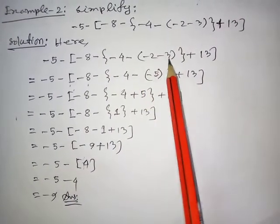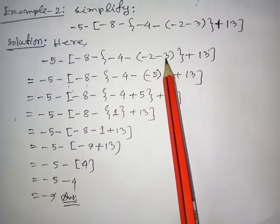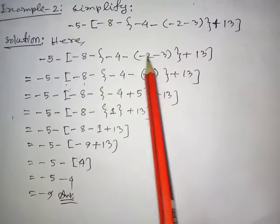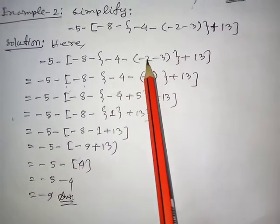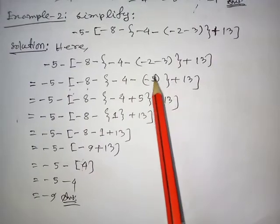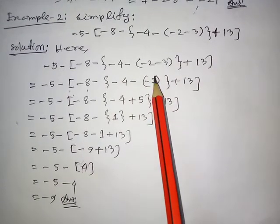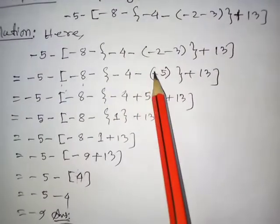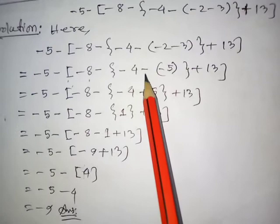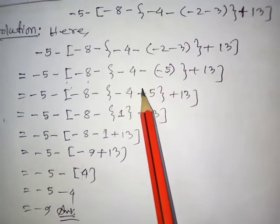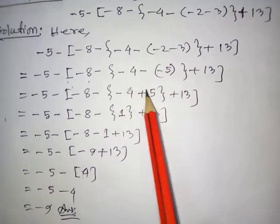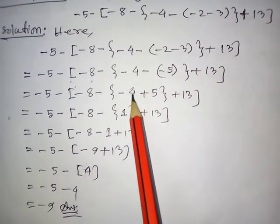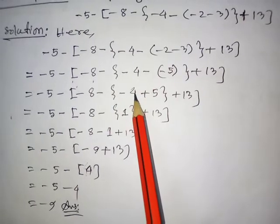First, solve the first bracket: minus 2 minus 3. Same sign numbers, so we add: minus 2 minus 3 equals minus 5. There is a minus sign before the bracket, so minus times minus equals plus. Now inside the second bracket we have 5 minus 4.